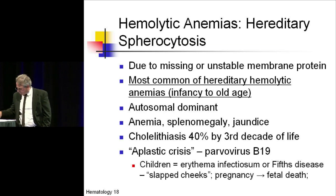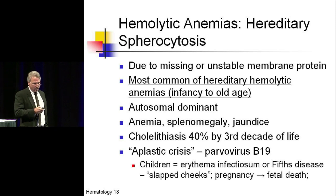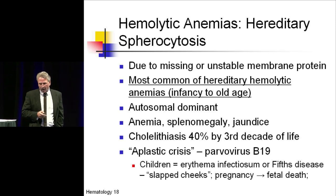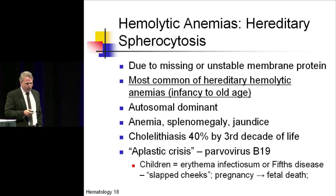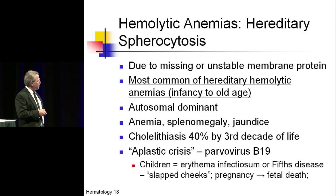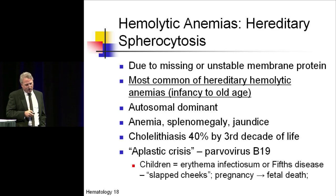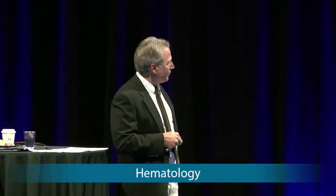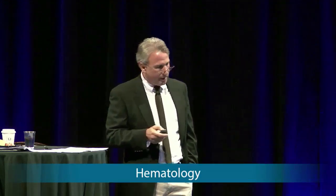Moving on to hemolytic anemias — the next several slides will cover these. The first category is hereditary spherocytosis, which is the most common hereditary hemolytic anemia from infancy to old age. It is autosomal dominant and patients have splenomegaly, jaundice, and commonly develop bilirubin stones leading to cholelithiasis, usually by the time they reach age 30.